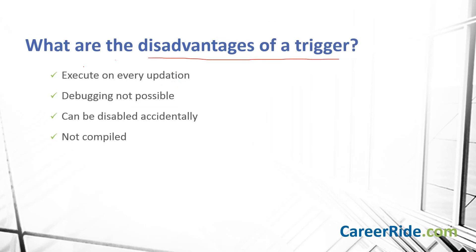What are the disadvantages of a trigger? First, triggers can execute every time some fields in the database are updated. If a field is likely to be updated often, it can become a big system overhead. Second, it is not possible to track or debug a trigger. Third, triggers can be accidentally disabled or dropped by a person. And triggers are not compiled.